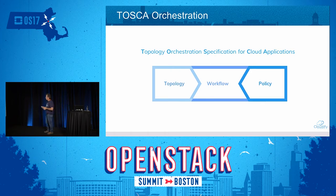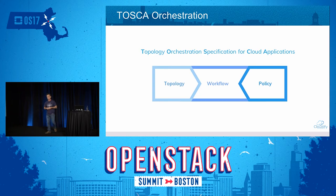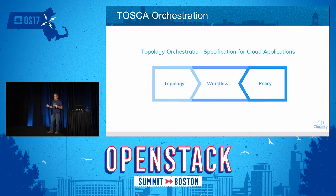Tosca breaks things down into three parts: the topology, which is the model; the workflows, which are the operations you perform on the model; and policies. Policies represent post-deployment dynamism — self-healing, auto-scaling, that type of thing. There's a way the orchestrator can associate a set of actions to the model, such that if three nodes are experiencing very high load, it will incrementally scale that particular tier and adjust up and down.